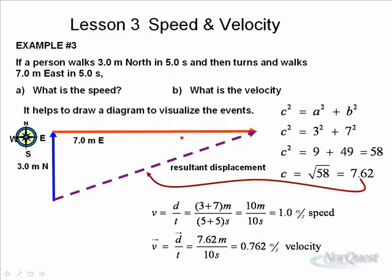The velocity works out to be seven point six two meters, that's our displacement, divided by ten seconds gives us a velocity of zero point seven six two. However, that's an incomplete velocity because it doesn't include the direction.